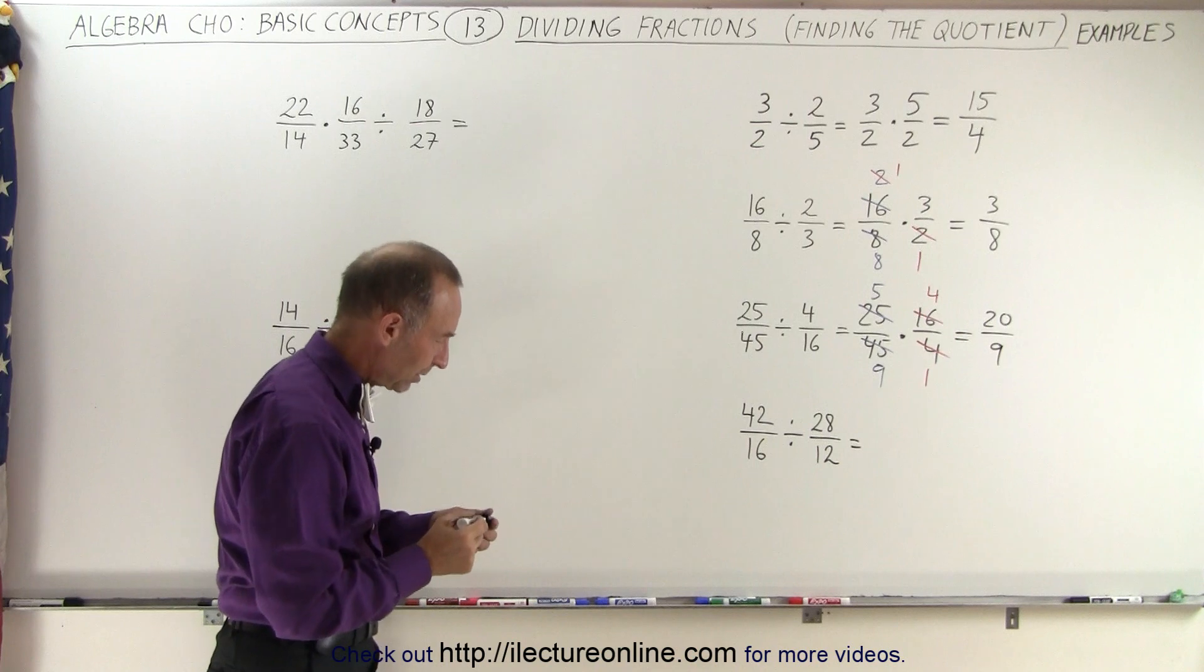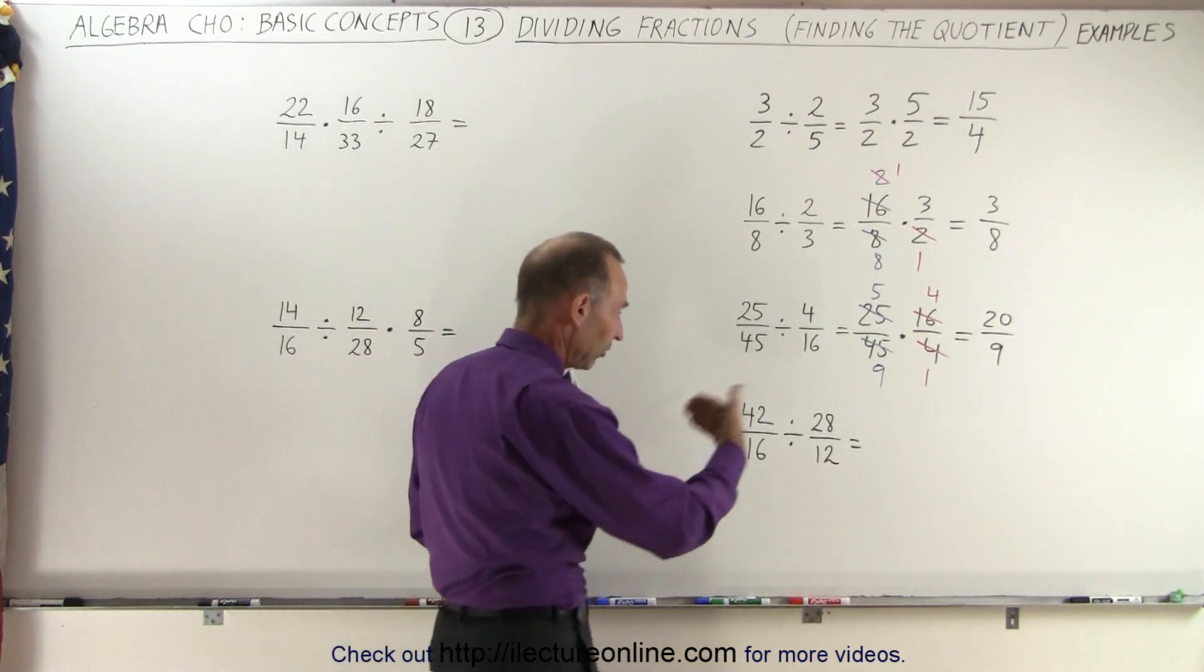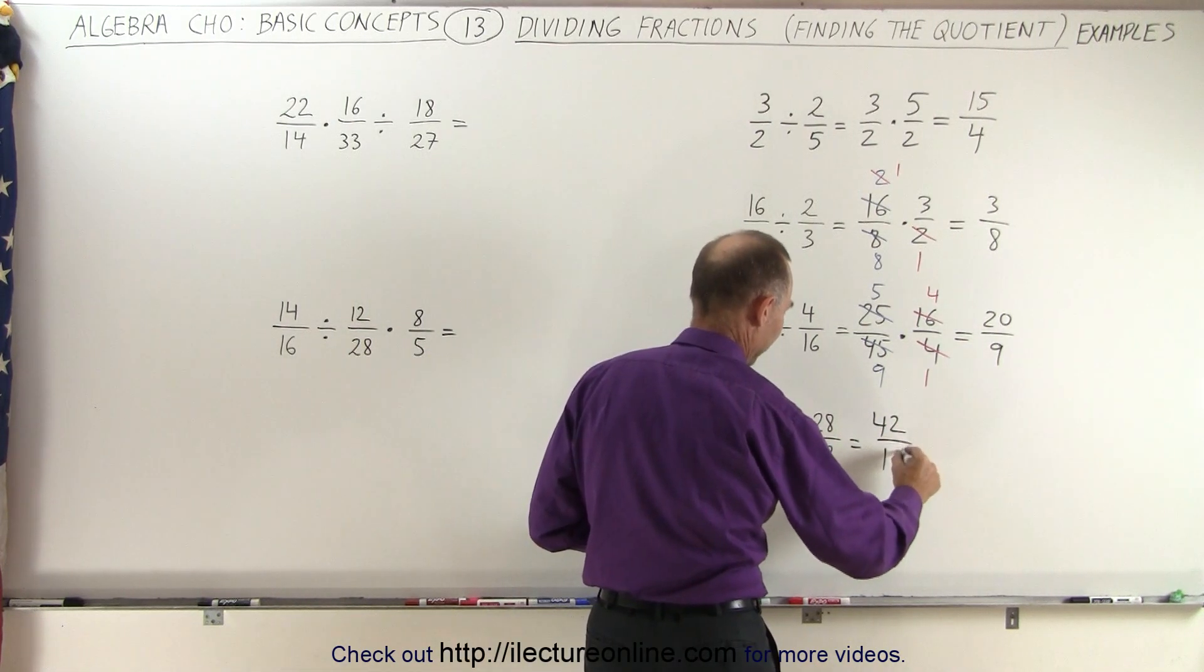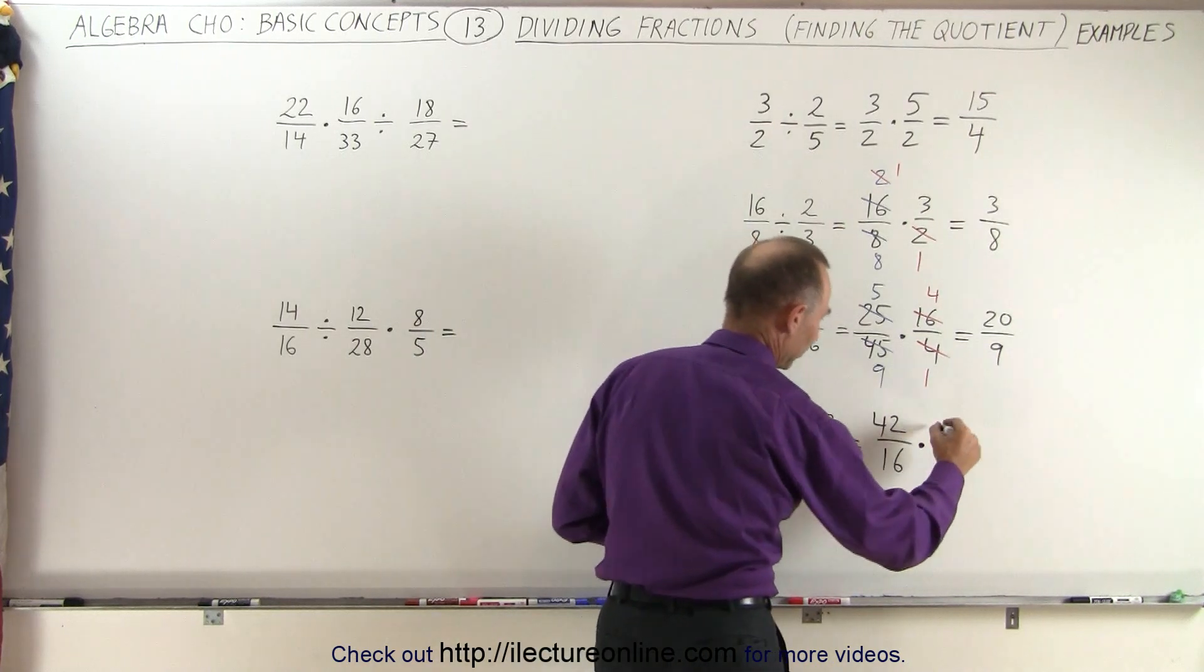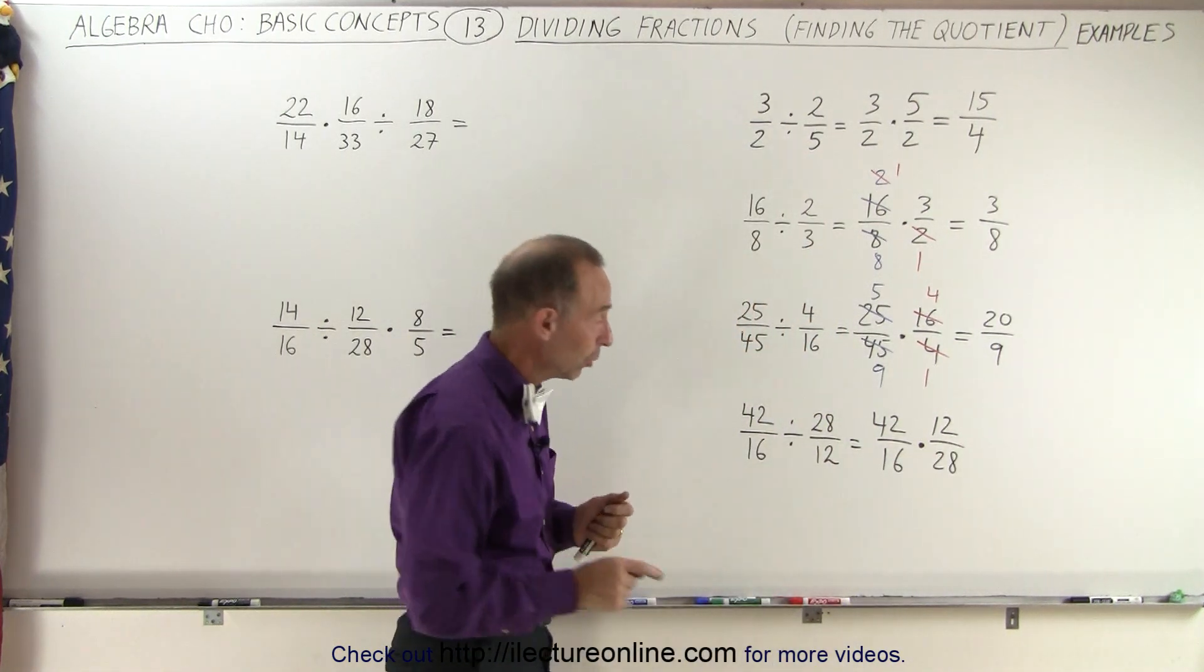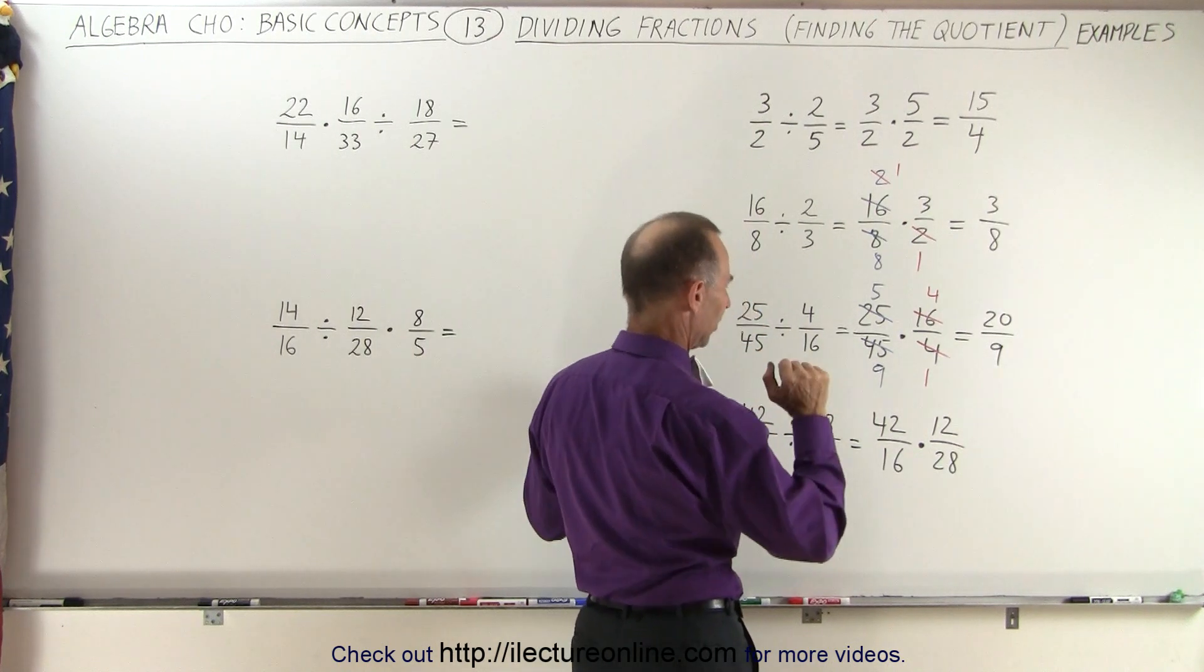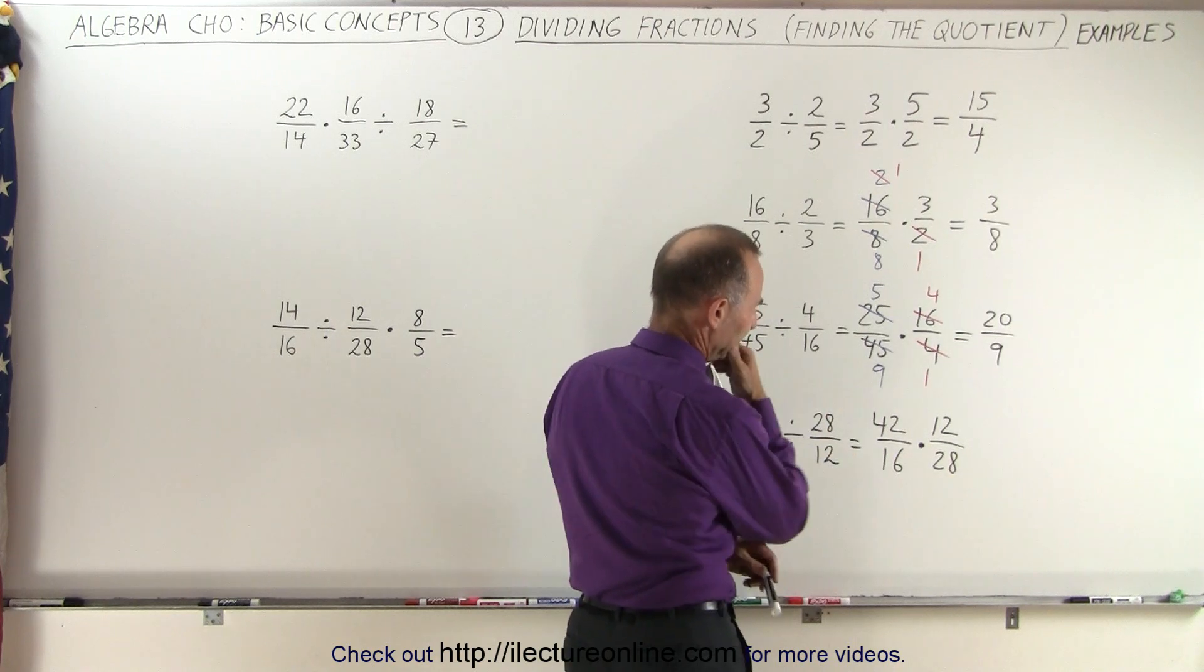So again here, take a look, you would like to start simplifying things right away, but hold off. First let's turn into a multiplication. So we get 42 divided by 16, we leave the first fraction alone, times the inverse of the second fraction, 12 divided by 28, and now we can start simplifying. Notice that 16 goes exactly three times, does it? No, it doesn't. They're both even.